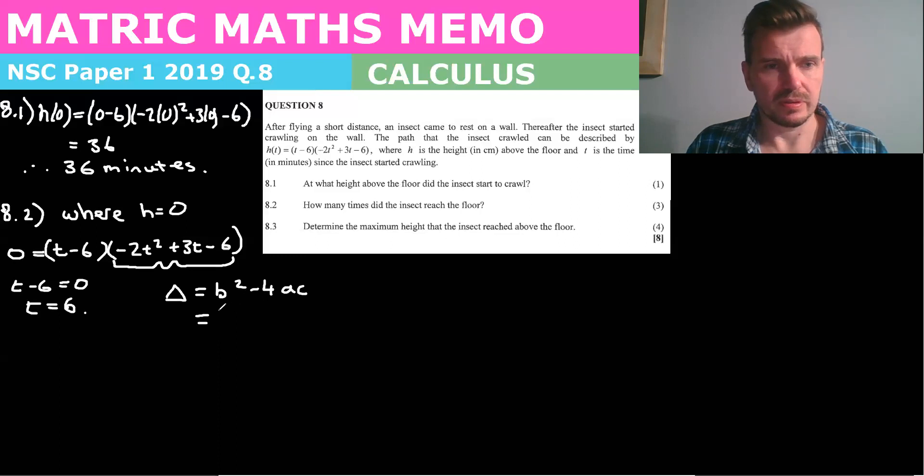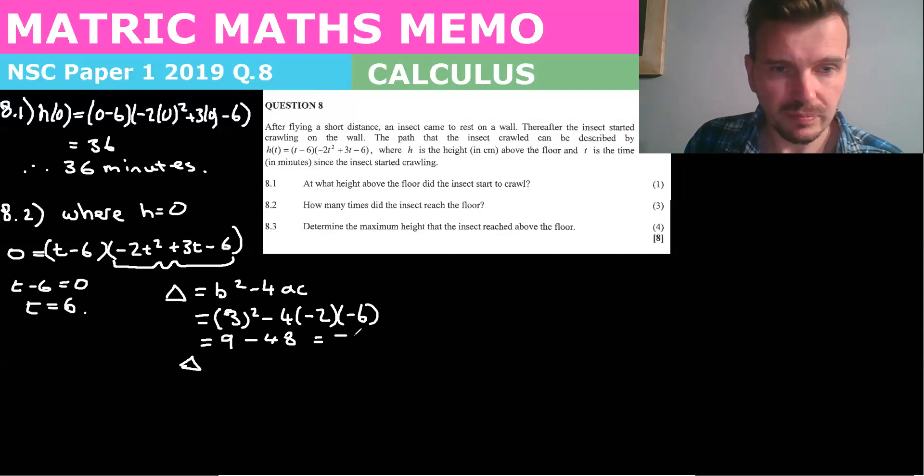So we know that delta equals b squared minus 4ac. So b is two. It'll be three squared minus four. And a is negative two. And c is negative six. And I get nine minus two times 12 is, two times six is 12 times four is 48 minus 48. And we get delta is a negative, negative 39. And so delta is less than zero. Therefore, it's not real.